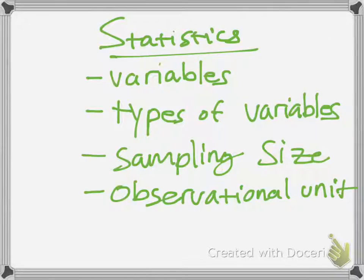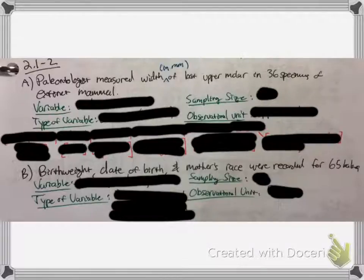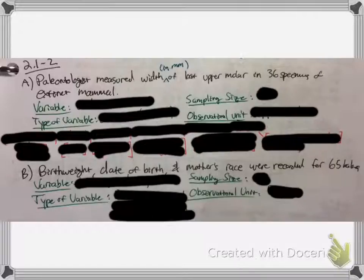So let's get to the examples. I'm just going to do two and try to make this a quick video. So paleontologists measure the width in millimeters of the last upper molar in 36 specimens of an extinct mammal.